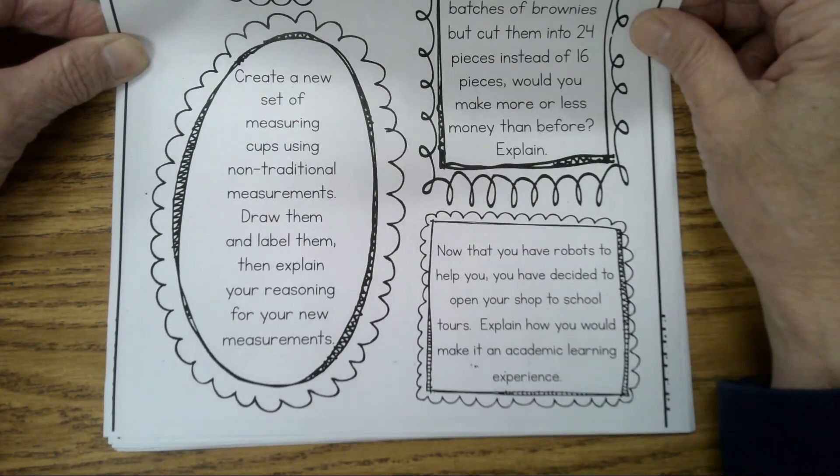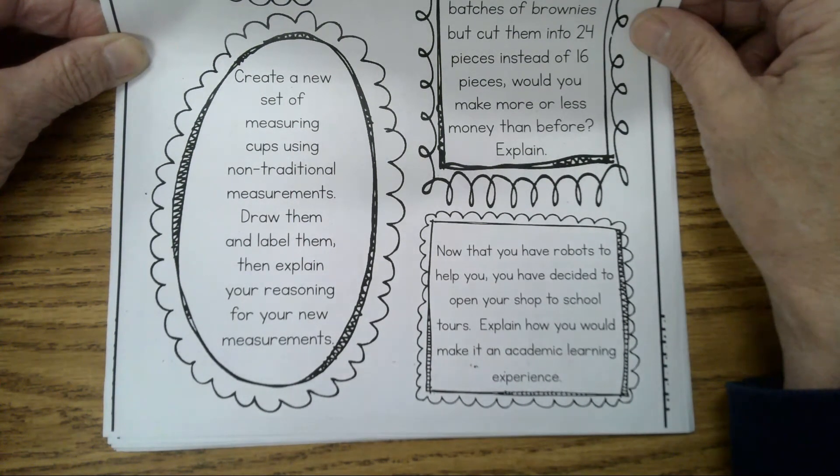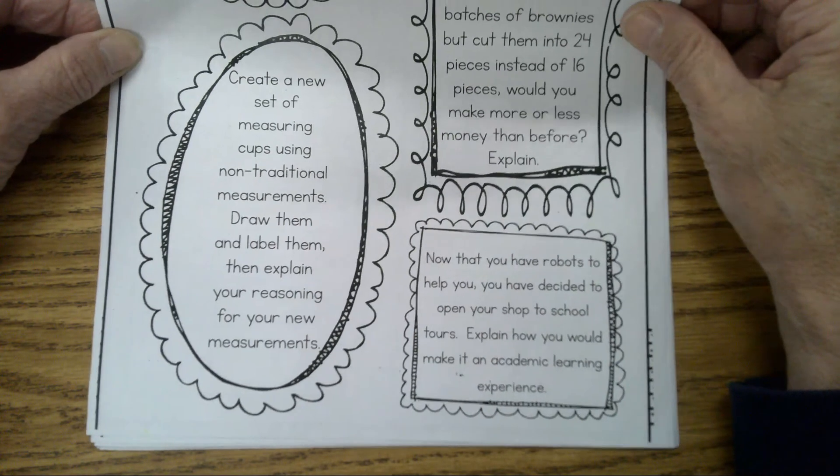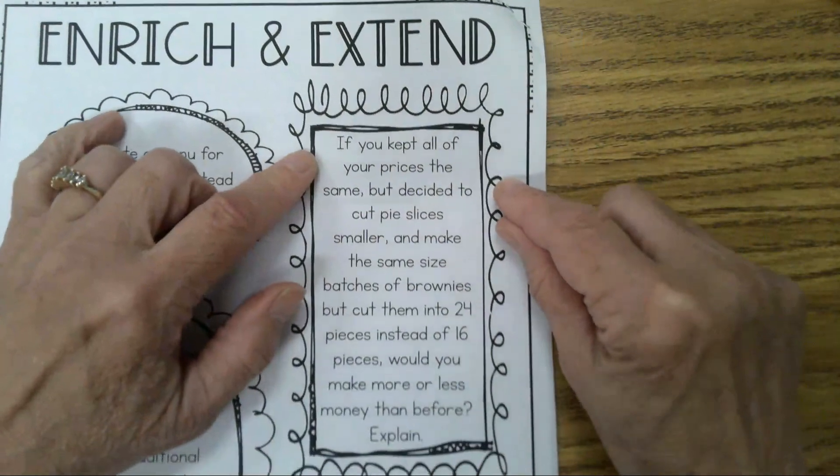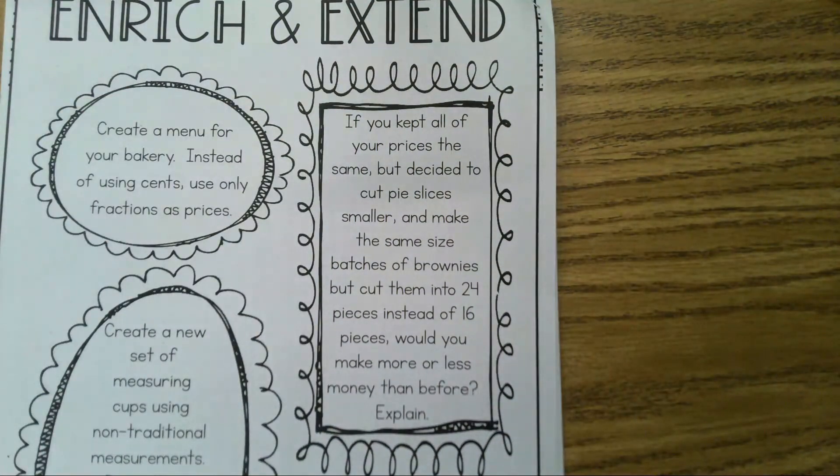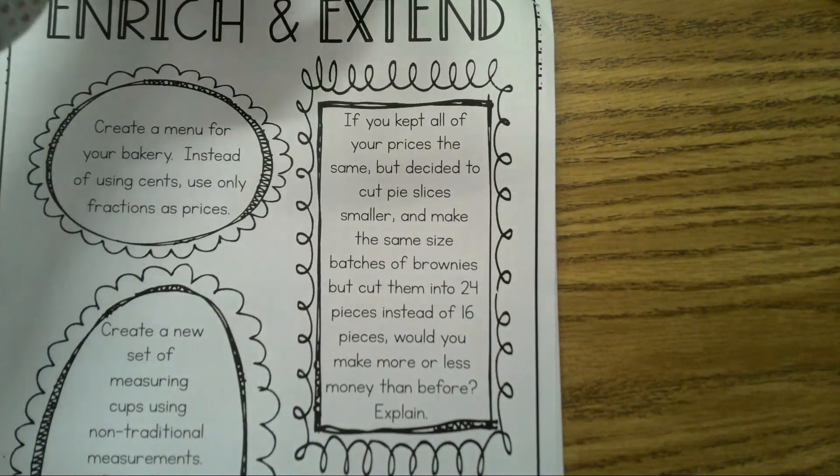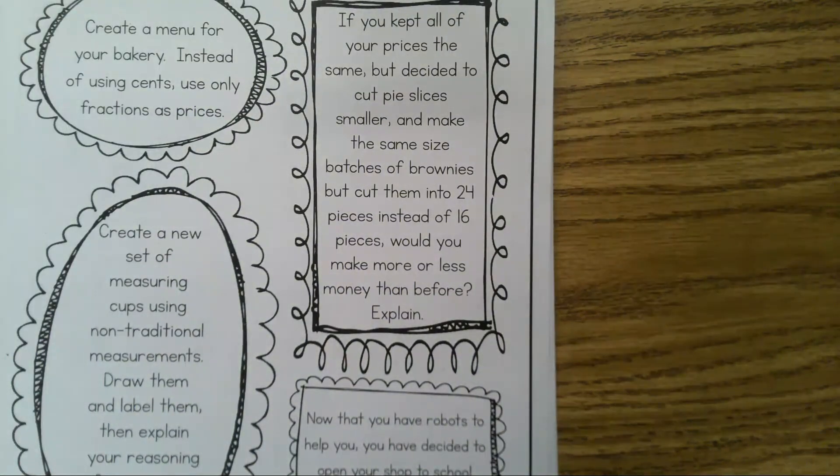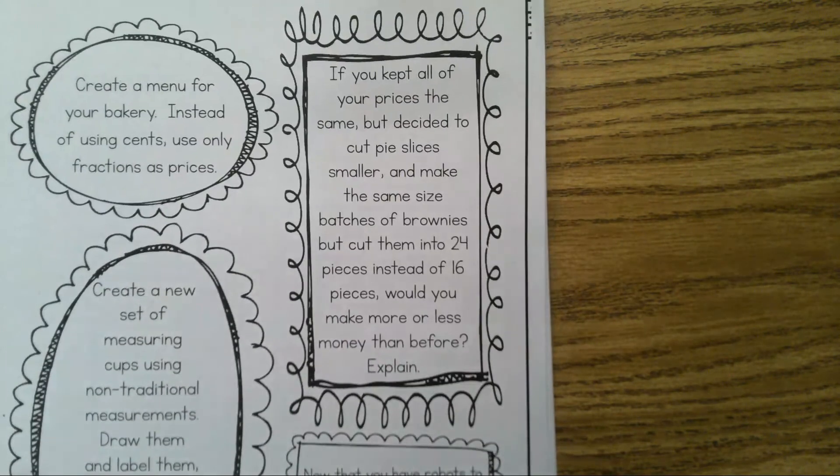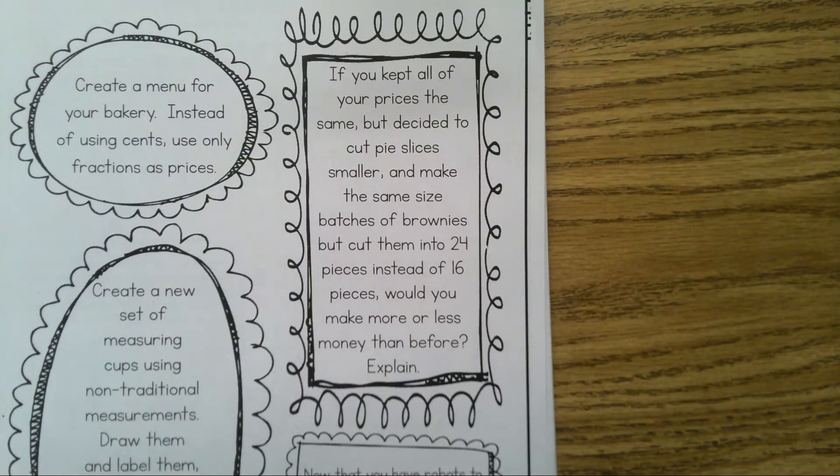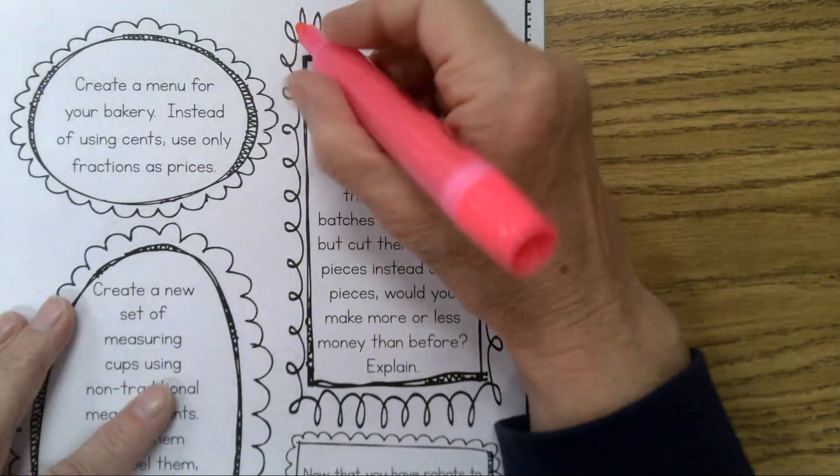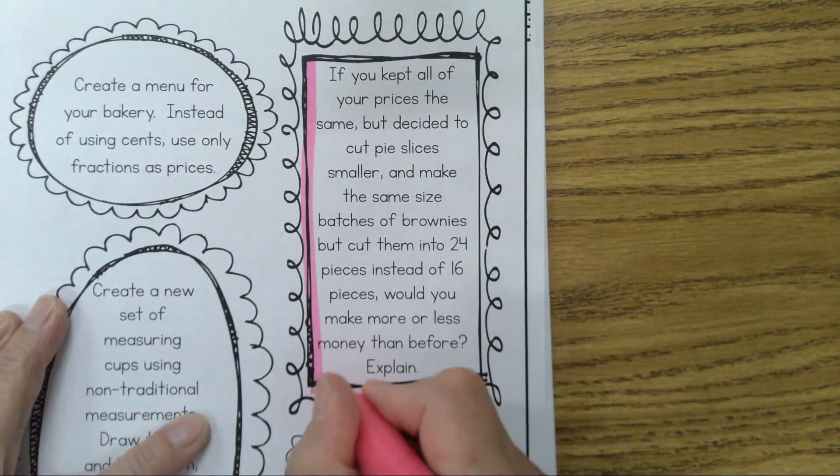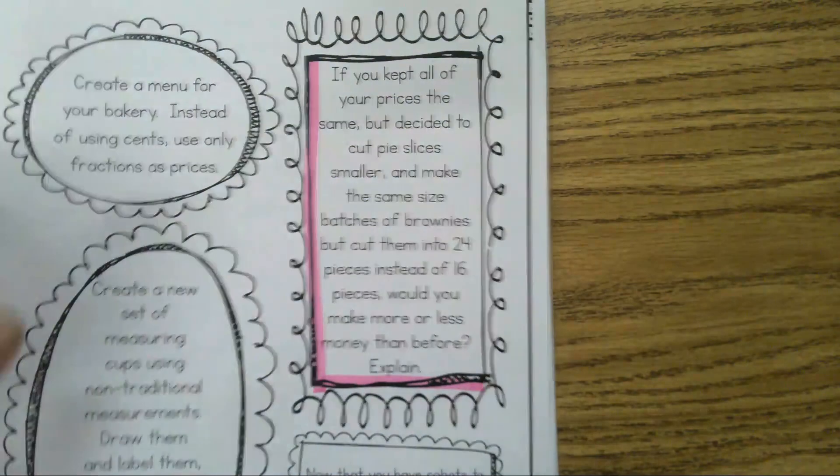The next possible: if you kept all of your prices the same but decided to cut pie slices smaller and make the same size batches of brownies but cut them into 24 pieces instead of 16 pieces, would you make more or less money than before? That one's a pretty good one. In fact, they do this all the time. If you've noticed how your candy bars might not be as big as they used to be or when you buy certain things. I like this one a lot. That's a good possibility.